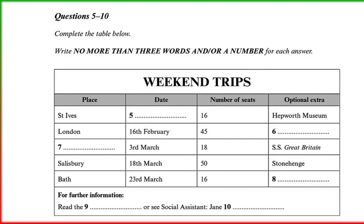We're going to Salisbury on the 18th of March, and that's always a popular one because the optional extra is Stonehenge, so we're taking the large coach with 50 seats. And then the last one is to Bath on the 23rd of March — yes, Bath the Roman city. That's in the 16-seater minibus, and the optional visit is to the American Museum — well worth a visit. If you want more information, have a look in the student newspaper, or have a word with my assistant. Her name is Jane Yentob — Y-E-N-T-O-B.